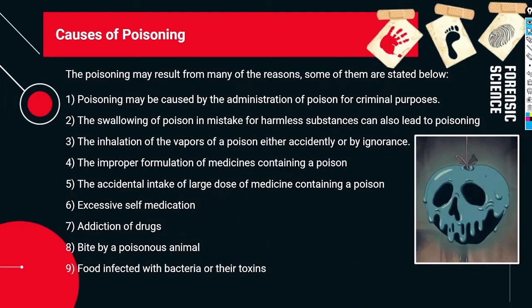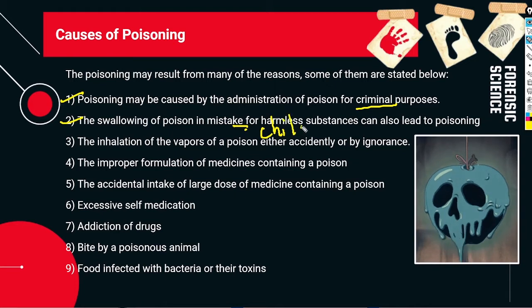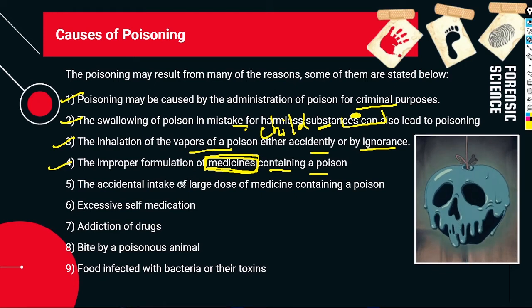Now let's look at the causes of poisoning. Poisoning may result from many reasons. First, it may be caused by the administration of poison for criminal purposes — giving poison to kill somebody. Second, swallowing of poison by mistake — for example, a child unaware that something is harmful consumes it. Third, inhalation of vapors of poison, either accidentally or by ignorance. Fourth, improper formulation of medicine containing a poison.